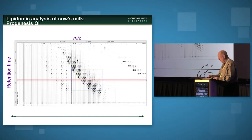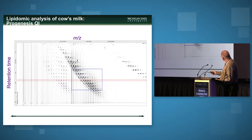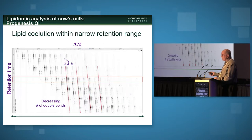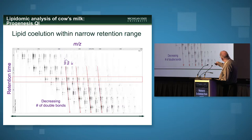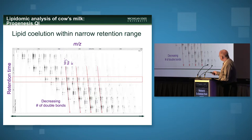If we magnify a region of this data matrix, you can really see just how rich it is — many lipids coelute. Triglycerides are not known for being easy to ionize, so you do see M+ammonium, sodium, and potassium adducts, along with many other coeluting lipids. As you go to longer retention times, you'll see slight shifts of two Daltons, reflecting a decreasing number of double bonds across the entire lipid profile.